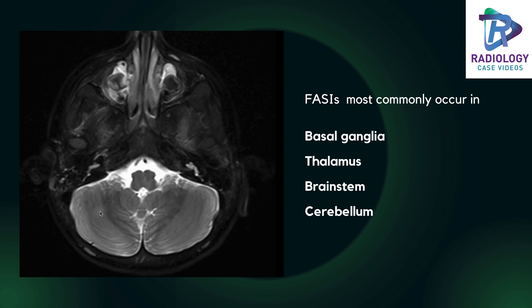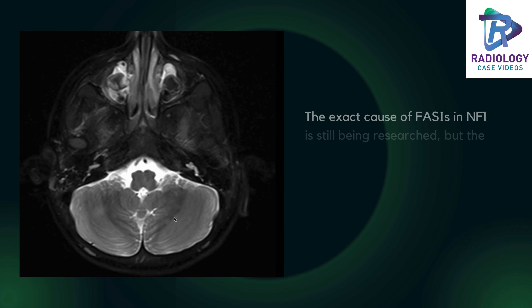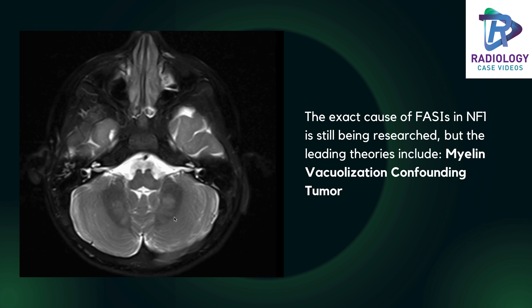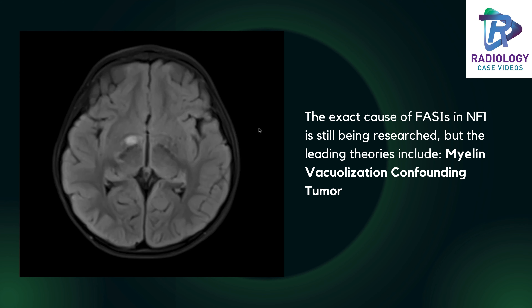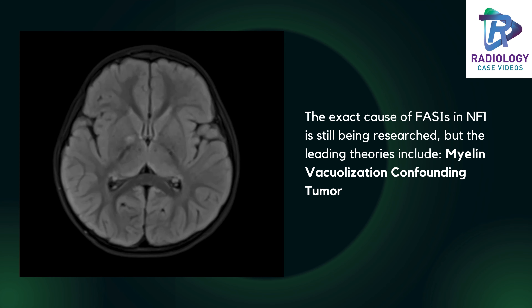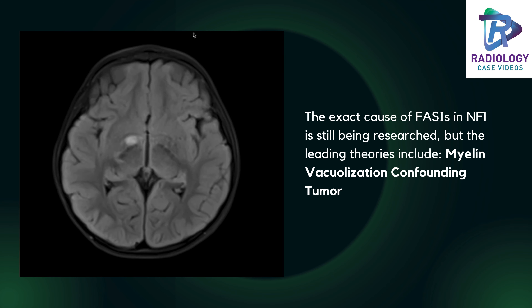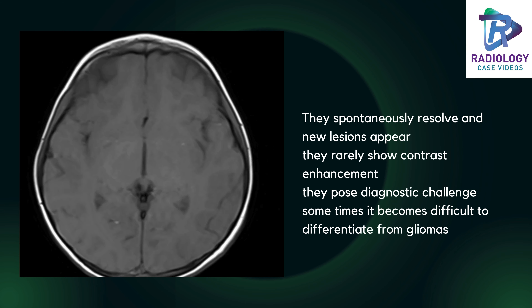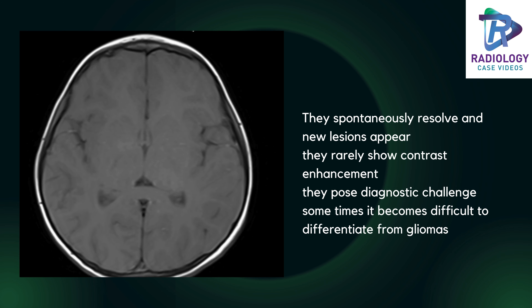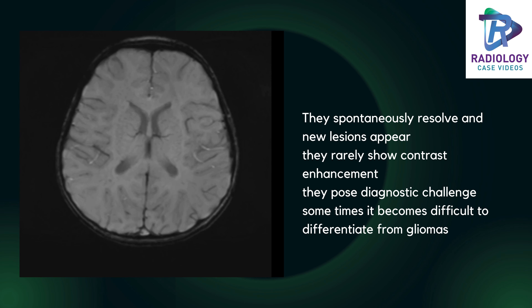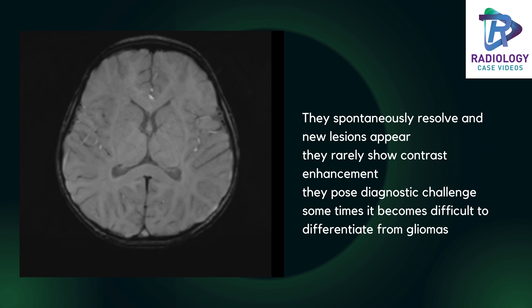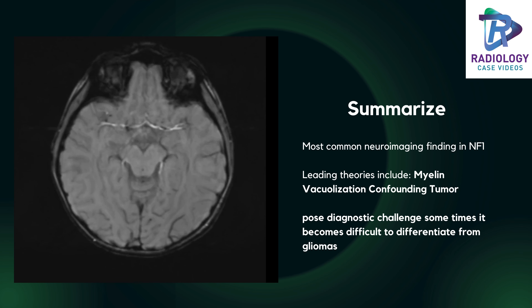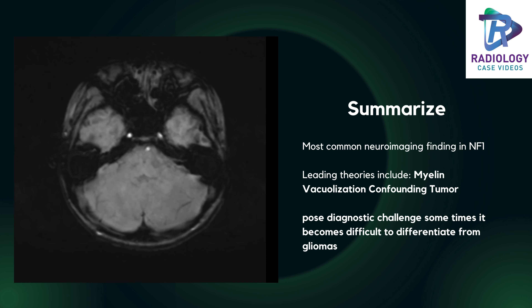And also in the right inferior cerebellum. These are nothing but foci of abnormal signal intensities, typically seen in cases with neurofibromatosis. These lesions sometimes disappear and are mostly due to myelin vacuolization. There is no blooming on SWI. Thank you very much — hope this case discussion was useful for you.